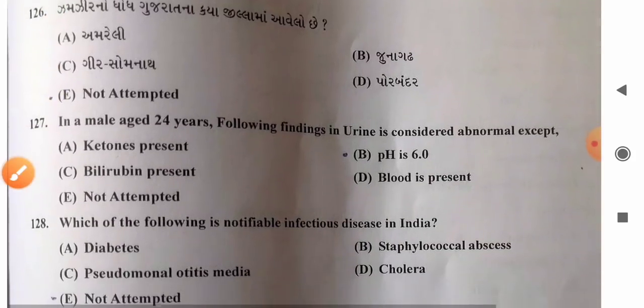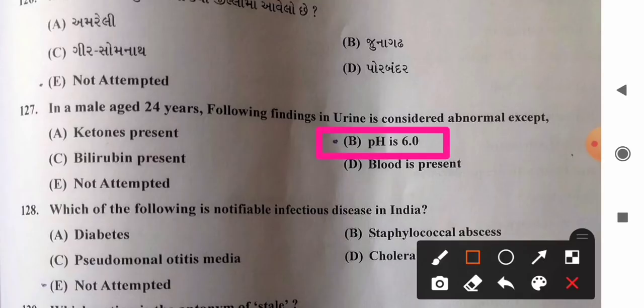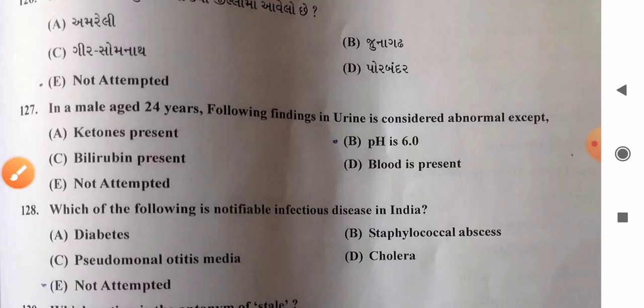Question 127: In a 24-year-old male, which finding in urine is considered abnormal except — options: A) ketone present, B) pH 6.0, C) bilirubin present, D) blood present. The usual normal urine pH is around 4–6, so pH 6.0 is quite normal. Ketone bodies, bilirubin, and blood in urine are all abnormal. So option B, pH 6.0, is the correct answer (the normal finding).